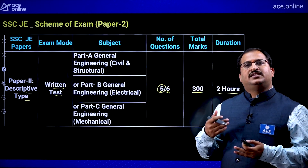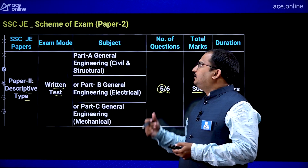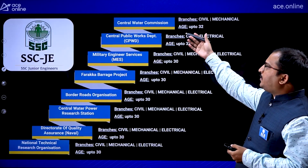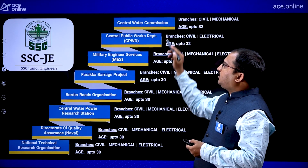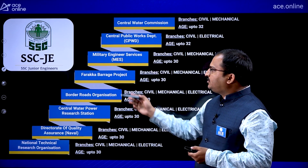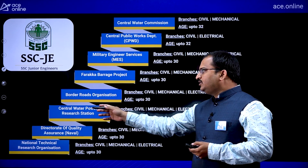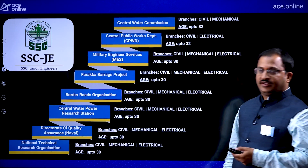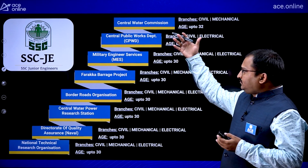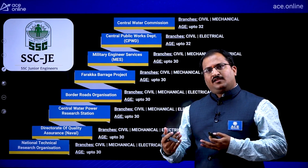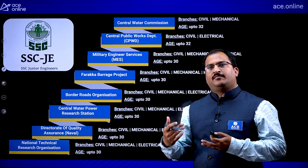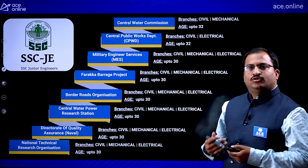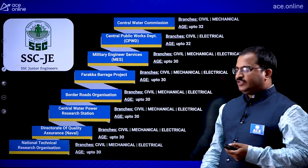Once you clear both Paper 1 and Paper 2 cutoffs, you get recruited into certain departments: Central Water Commission, Central Public Works Department, Military Engineering Services, Farakka Barrage Project, Border Roads Organization, Central Water Power Research Station, Directorate of Quality Assurance, and National Technical Research Organization. Some organizations require Civil and Mechanical, some require all three branches, and some require Civil and Electrical. Check the age limit and apply when the official notification comes out.